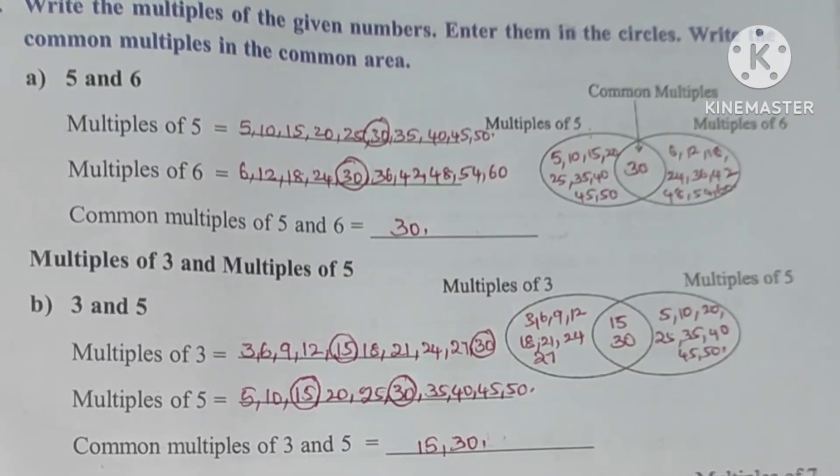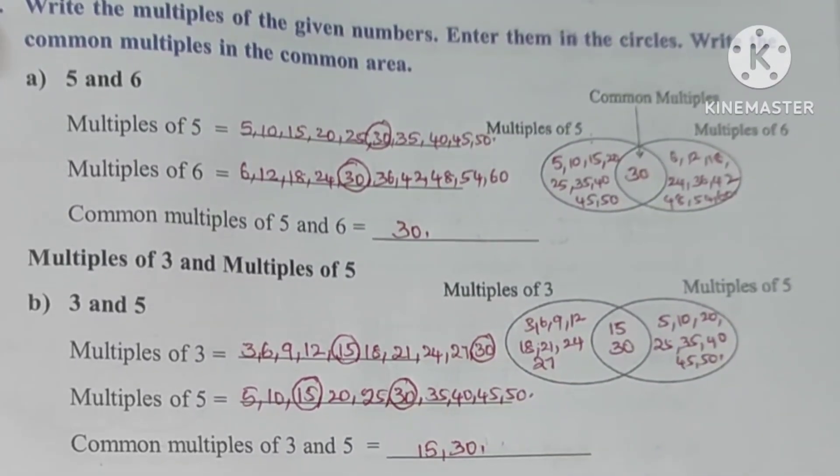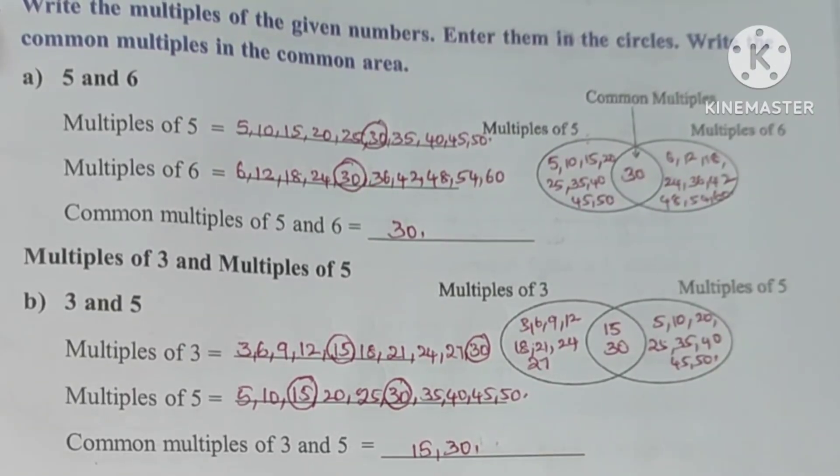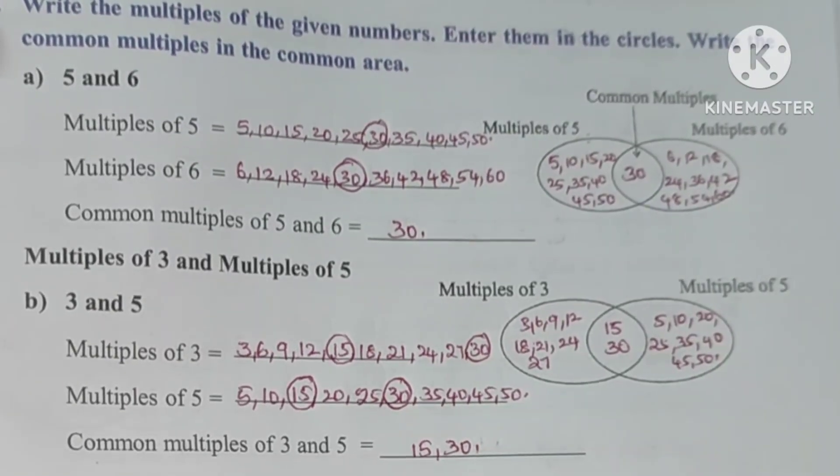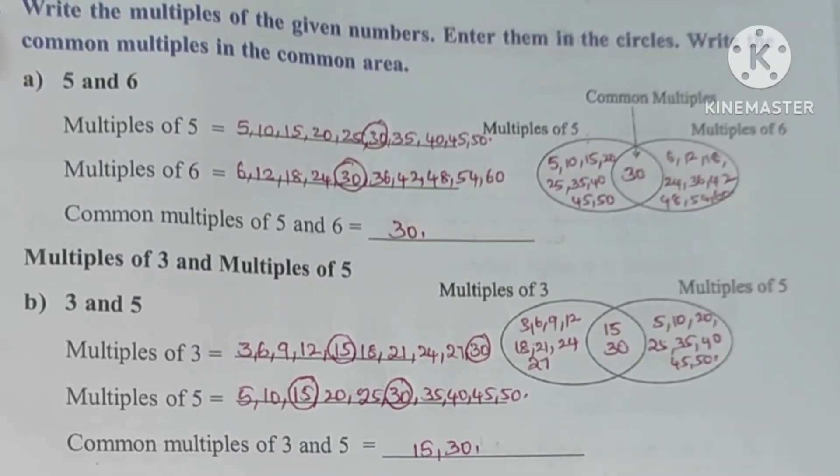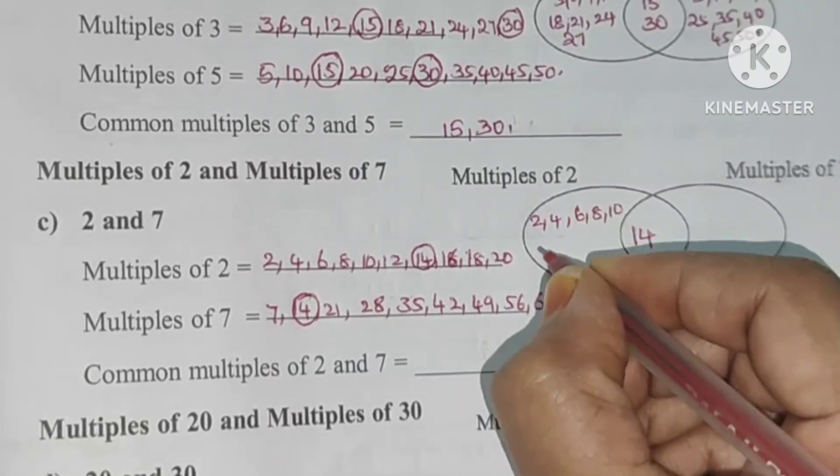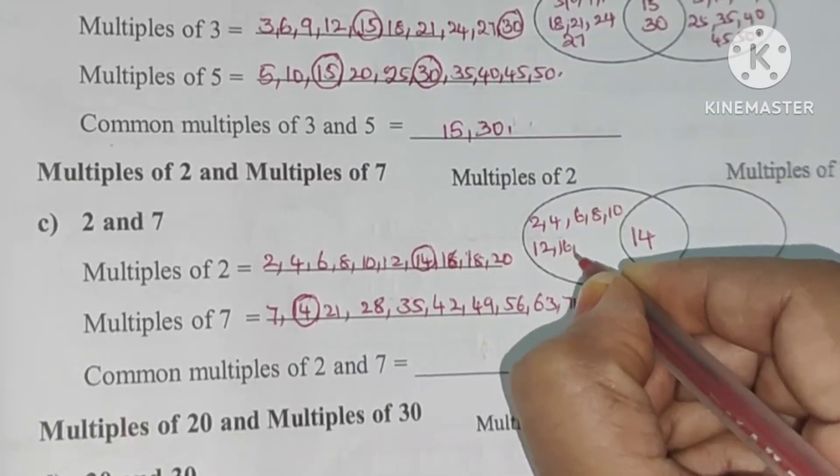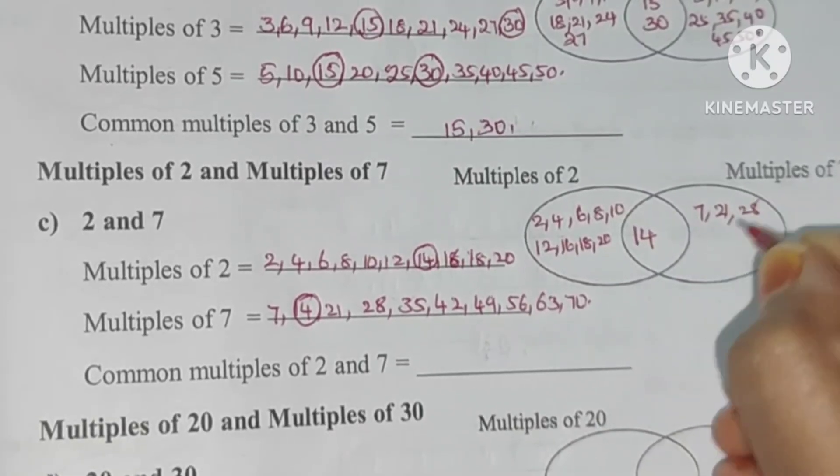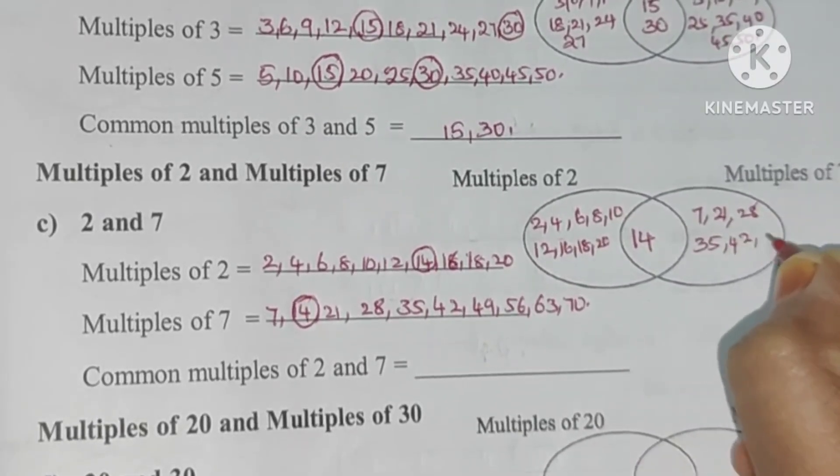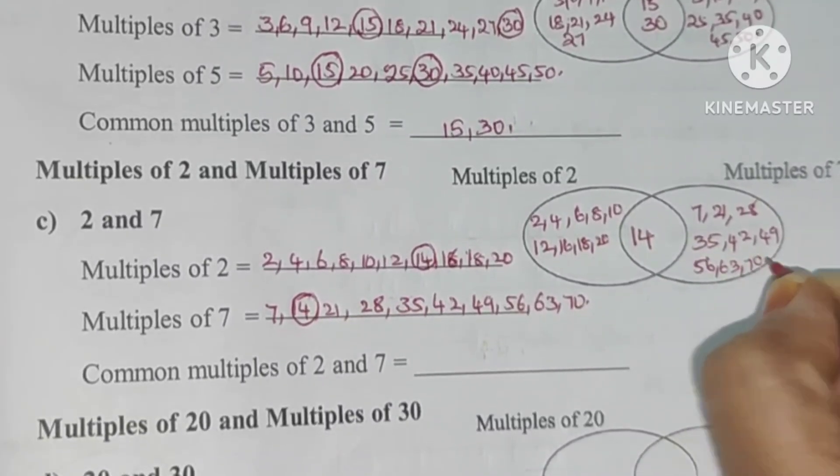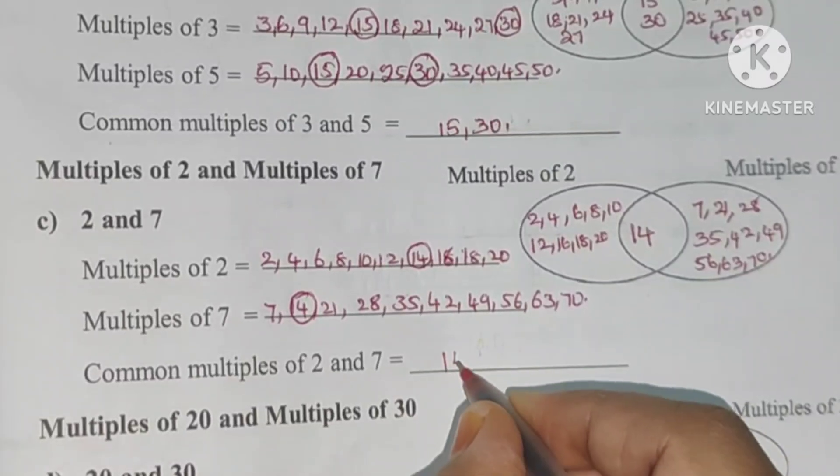And multiples of 2 and multiples of 7. I will write the common 2 to 7 here. The common multiple is 14. So this is very simple.